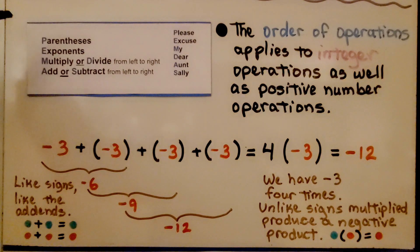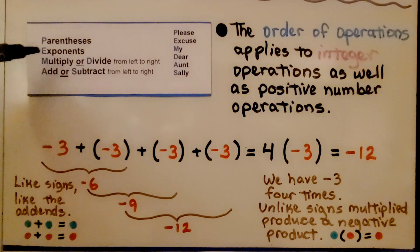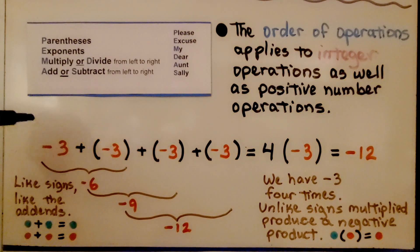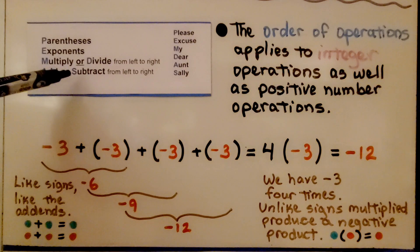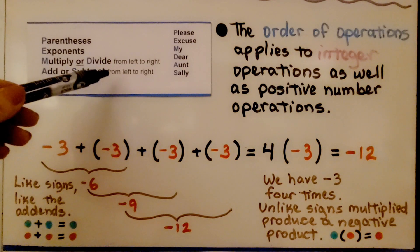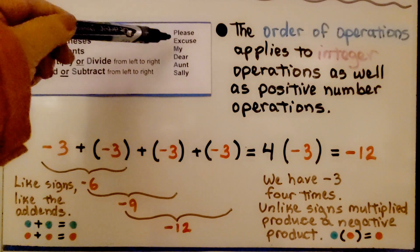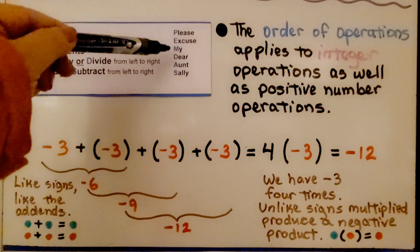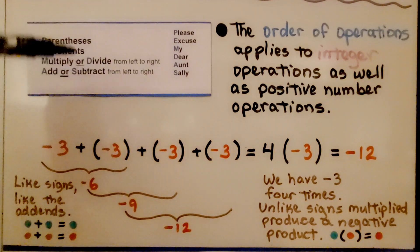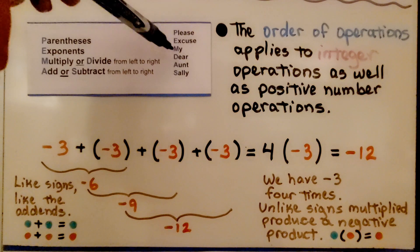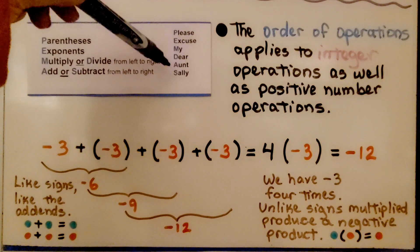First we do parentheses, then exponents, then we multiply or divide from left to right, whichever comes first, then we add or subtract from left to right, whichever comes first. You can remember 'Please Excuse My Dear Aunt Sally' for parentheses, exponents, multiply or divide, add or subtract.